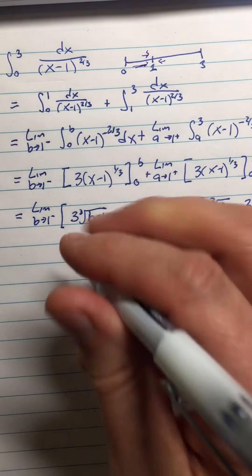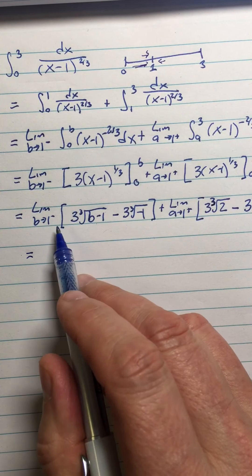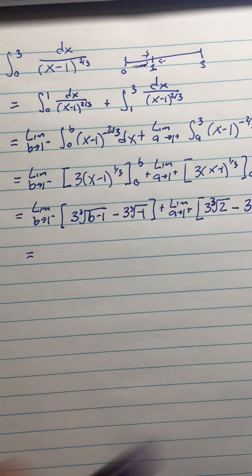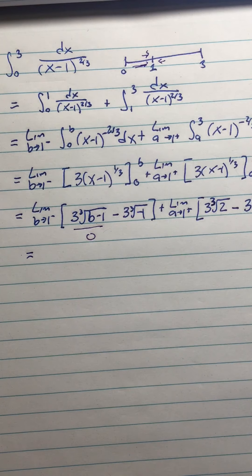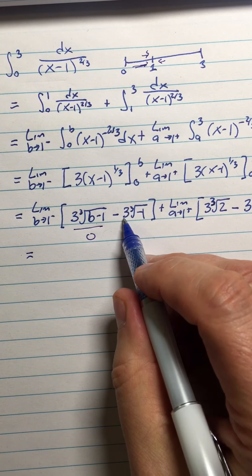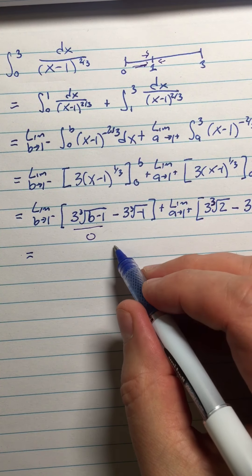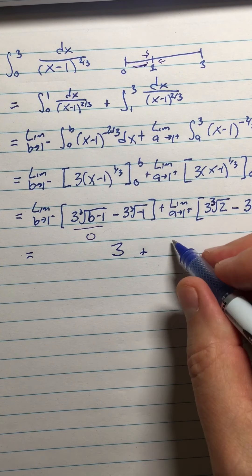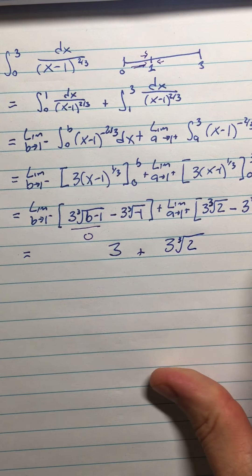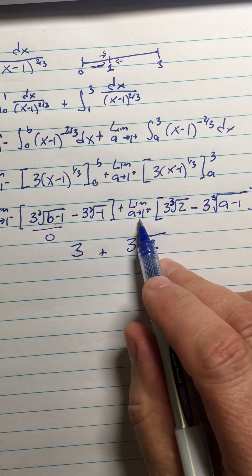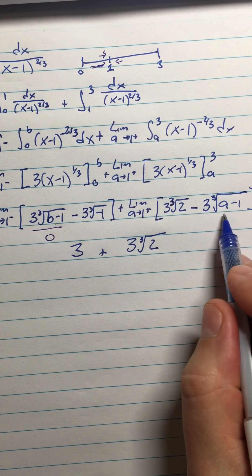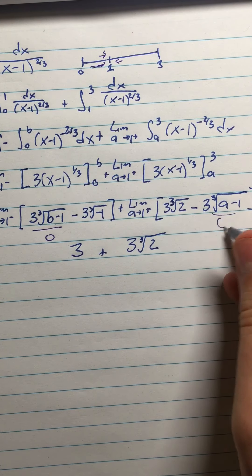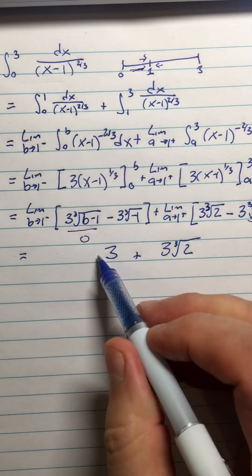All right, so now what does all this stuff equal? Well, the limit as b approaches 1 from the left, we can really evaluate this limit by substitution. This is just going to be 0. And then here I'm going to have negative 3 times the cube root of negative 1, which is negative 3 times negative 1 is 3. And then over here I'm going to have 3 times the cube root of 2. And then here, plugging in the 1, I have cube root of 0, so I can evaluate that by substitution. This is also 0. And then this is my answer, 3 plus 3 times the cube root of 2.